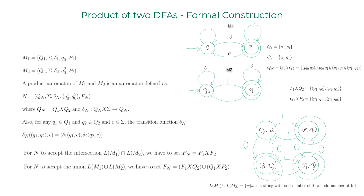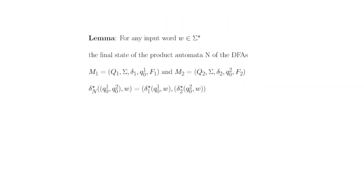I know you're already overloaded with symbols and notation, so I'm going to hold off the formal proof of this lemma involving delta star of the product automaton N — we'll discuss that in class. Feel free to reach out if any of this is unclear. See you!